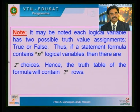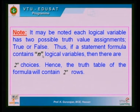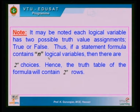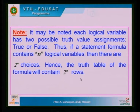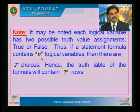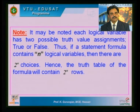If a statement formula contains n logical variables, the truth table will have 2^n rows. This is because each proposition has exactly two choices — true or false — and there are n propositions, so the total number of combinations is 2×2×…×2 (n times) = 2^n, by the multiplication principle.